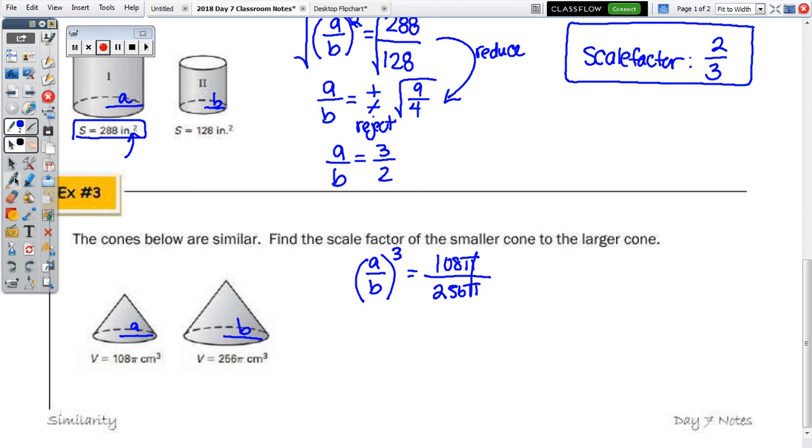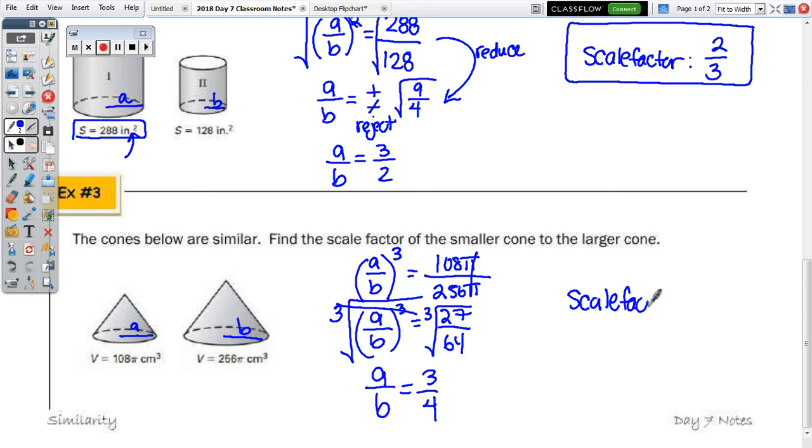So, I'll rewrite it as A over B cubed equals 27 to 64. So, now when we take the cube root, we have A over B equal to 3 fourths. So, therefore, our scale factor is 4 thirds, and that's greater than 1.